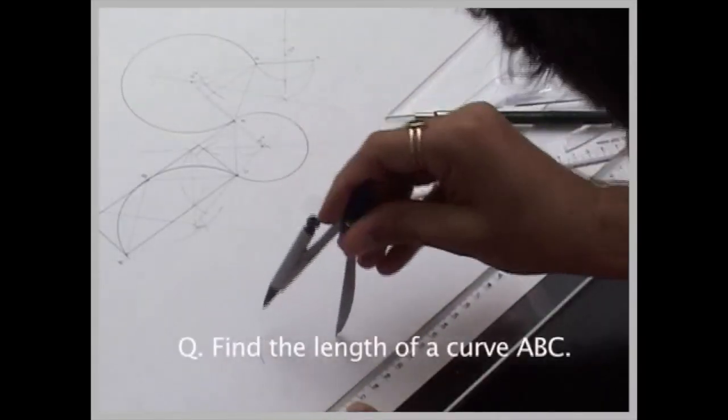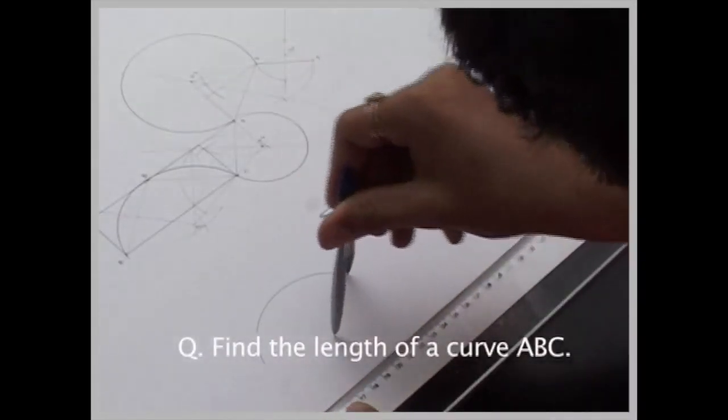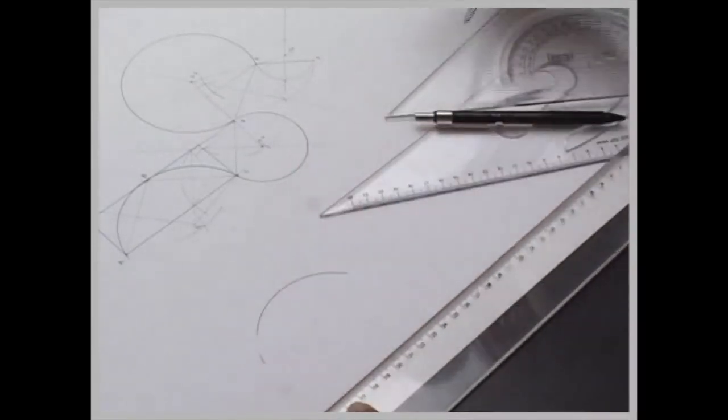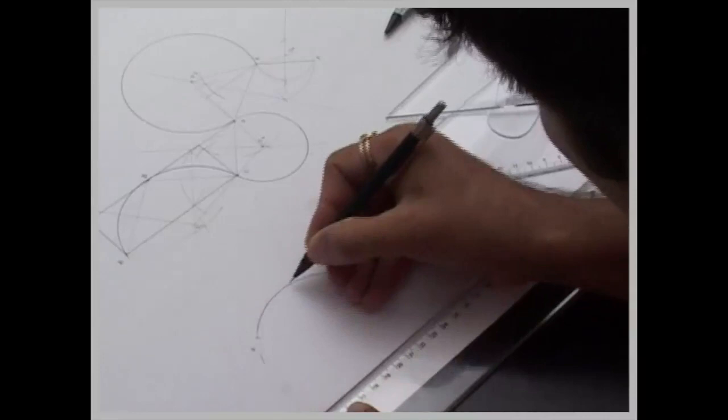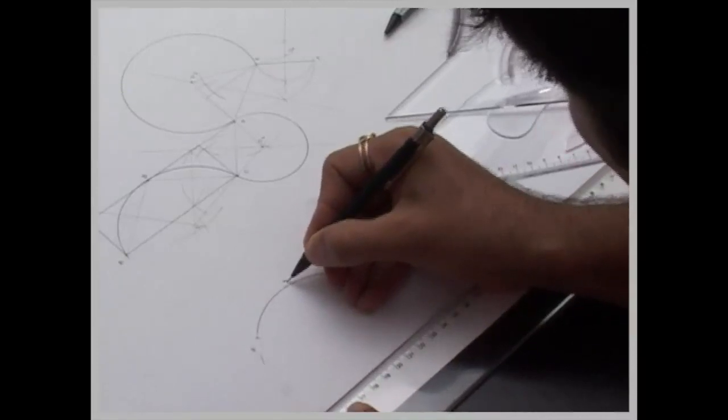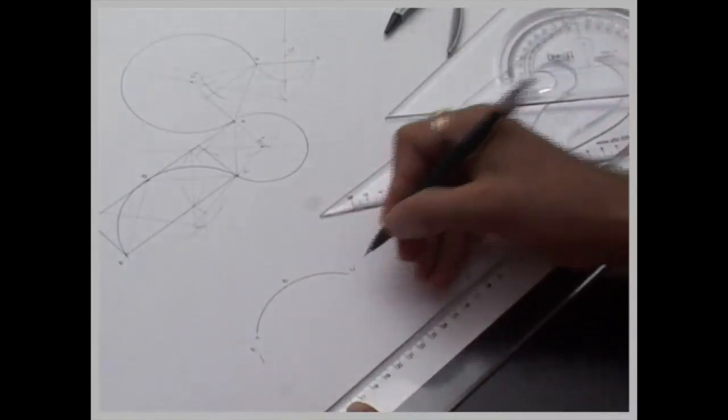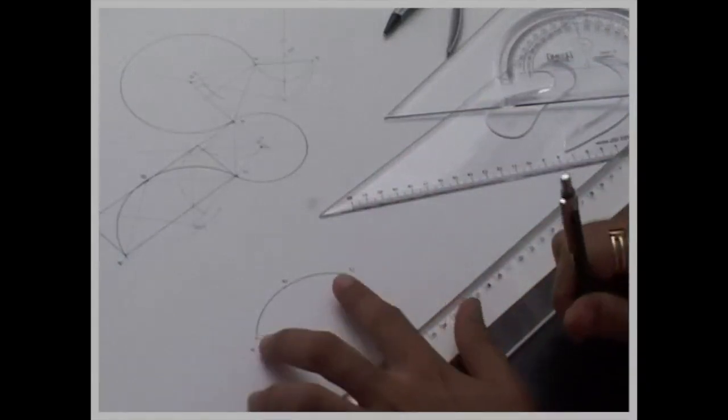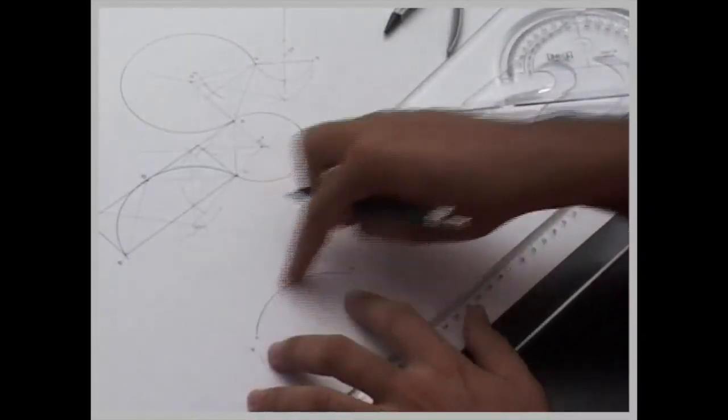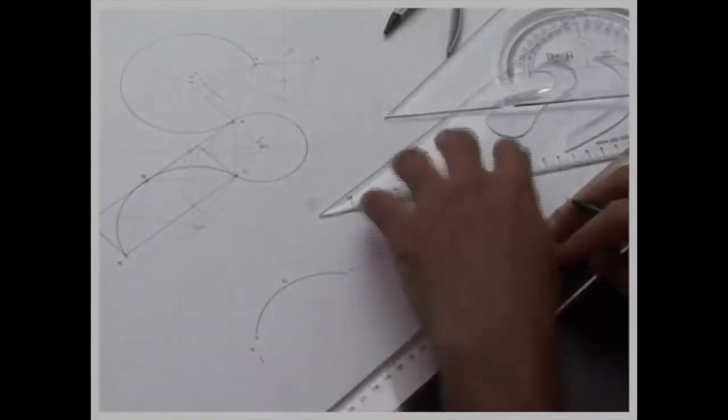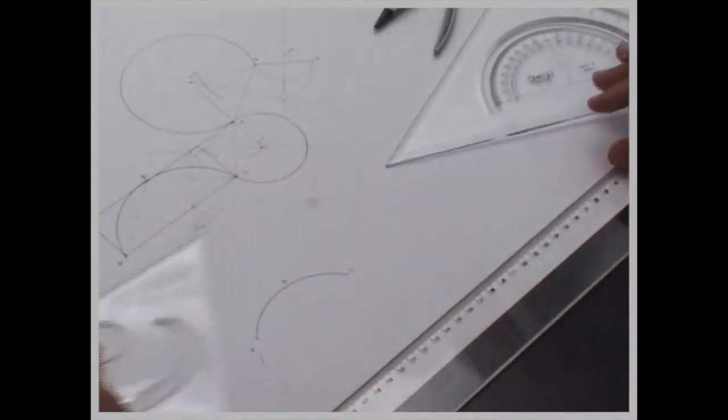Now let's say you have a curve - point a, point b, and point c. And if you want to find out the length of this arc, you have only an arc like a, b, c. If you want to find out the length of this arc, then what we will do?